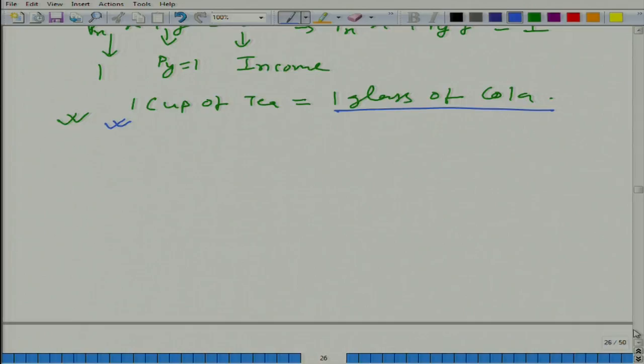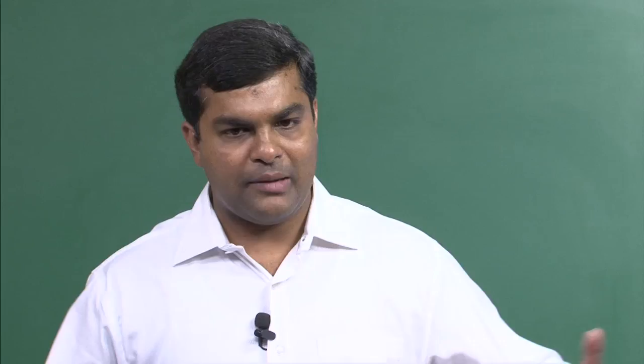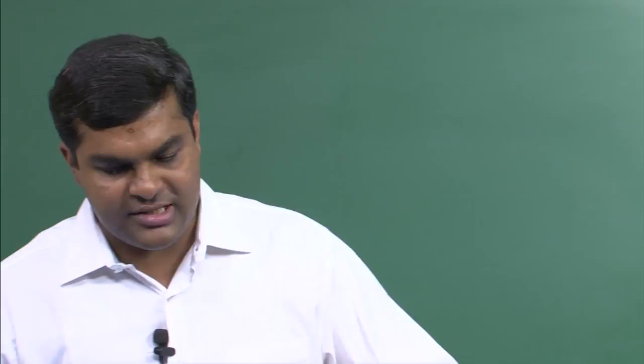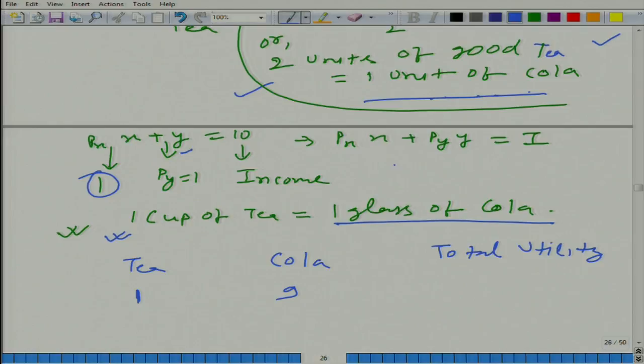Here we have tea, here we have cola and here we have total utility. When we have one unit of tea, how many cola we can have? Nine. Because one unit of tea is costing one rupee, we have nine rupees left and the price of cola, one glass of cola is one rupee. In nine rupees, you can afford nine glasses of cola. What will be your utility? Nine multiplied by 2, because utility is equal to x plus 2y. So 9 multiplied by 2, 18 and 1, equals 19.